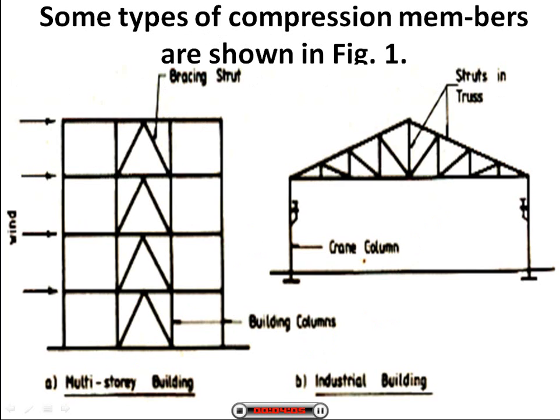Some types of compression members are shown in figure 1. We can see the skeleton of a multi-story building — the column withstanding the wind, the bracing struts, and the building column. For industrial buildings, we can see the struts in a truss and the crane column.